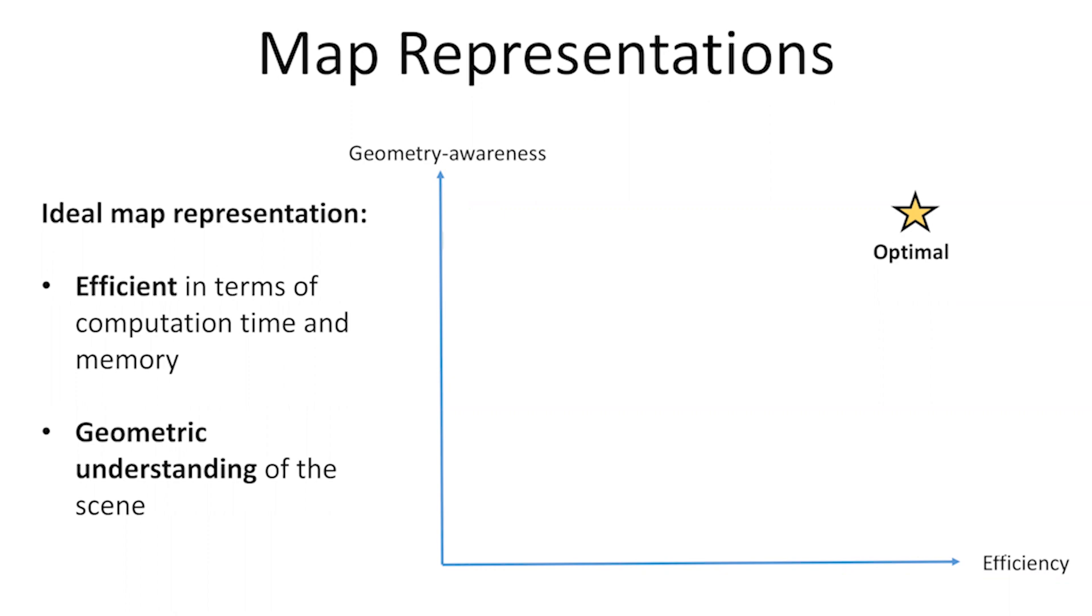The ideal SLAM systems should be efficient and have geometrical understanding of the scene. Dense representations have more scene information but are not computationally efficient.